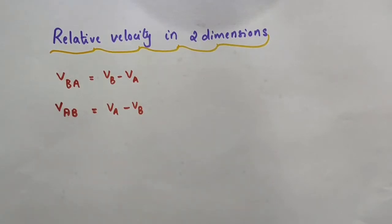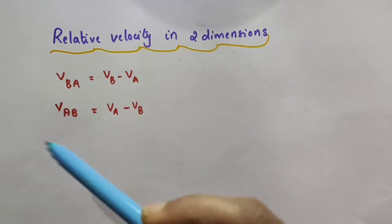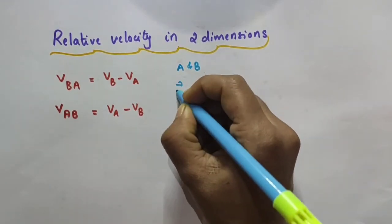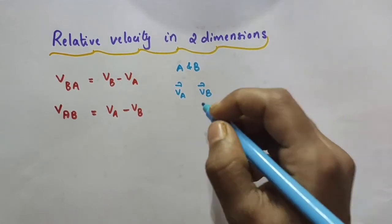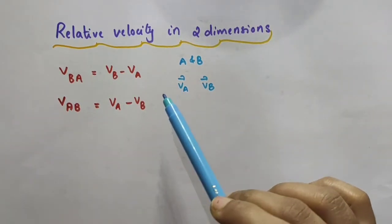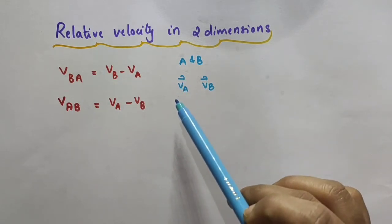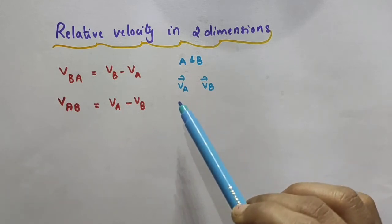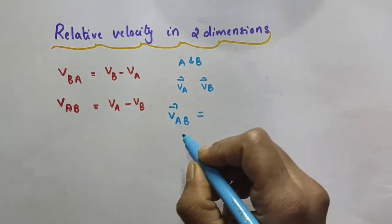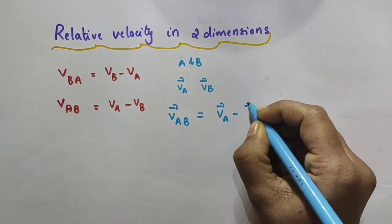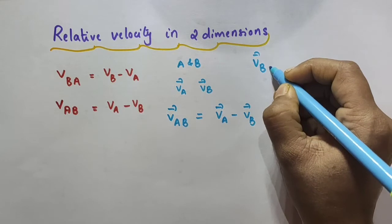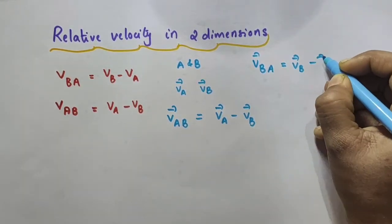Now, the same concept can be extended to include motion in a plane — that is, two dimensions — or in three dimensions. Consider two objects A and B which are moving with velocities vector VA and vector VB respectively, with respect to some common frame of reference, say the ground. Then the relative velocity, that is the velocity of object A relative to object B, can be written as vector VA minus vector VB. Similarly, the velocity of object B relative to object A can be written as vector VB minus vector VA.